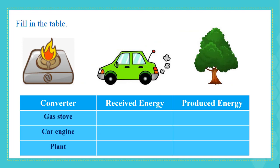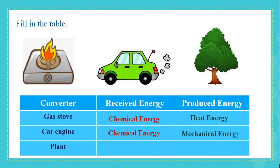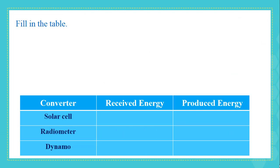Pause the video and fill in the table with the corresponding received and produced energy for each converter shown. The gas stove receives chemical energy due to the combustion of butane gas and converts it to heat energy we use to cook food. The car engine receives chemical energy due to the combustion of fuel and converts it to mechanical energy that allows the car to move. Green plants receive light energy from the sun and convert it to chemical energy needed to produce their own food.